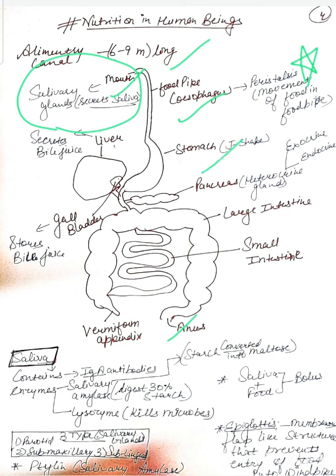Stomach is J-shaped. The largest digestive gland is liver, second largest digestive gland is pancreas. Liver has a pouch-like structure on its side that is called gall bladder. Liver secretes bile juice.